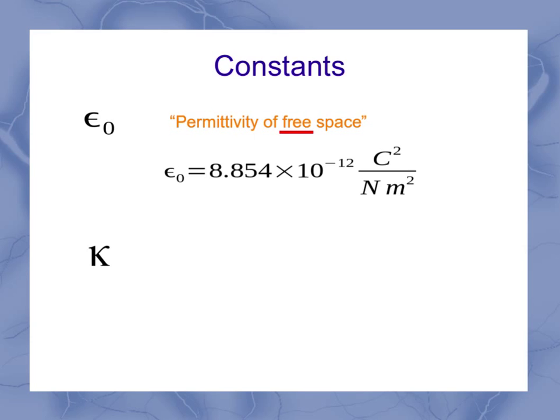Now kappa is our dielectric constant. And this is the Greek letter kappa. So it's not just a k, it's a Greek letter kappa in there. Looks very similar to a k, though. It's a material specific constant. So the value varies from material to material. A kappa value of 1 is what we have for free space.